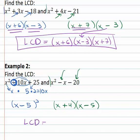So now for the least common denominator, we need to use all factors. We've got an x minus 5, an x plus 4, and we already have x minus 5, so we don't write it again.